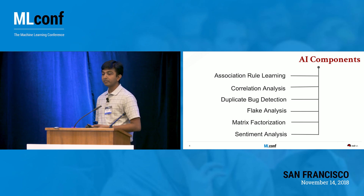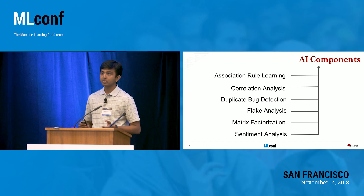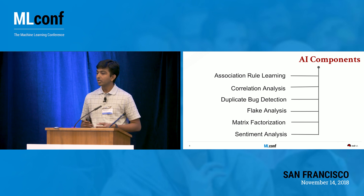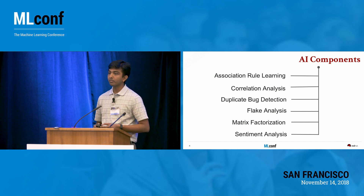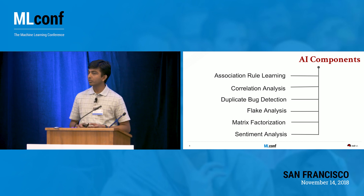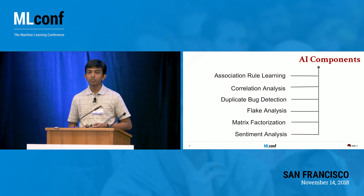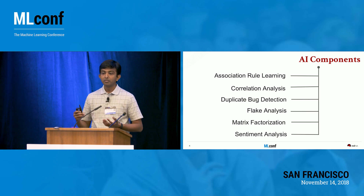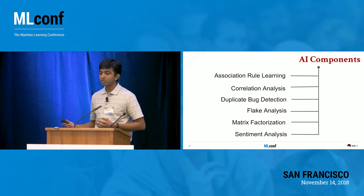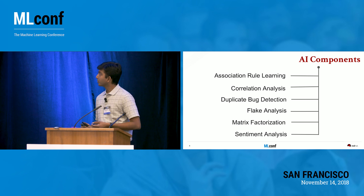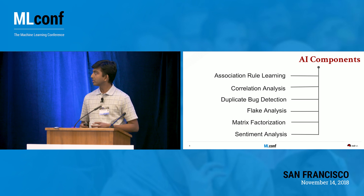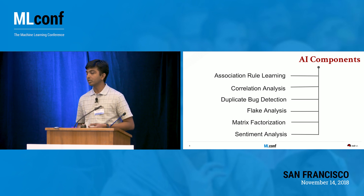We have matrix factorization, which is popular and used in recommendation systems. You might recognize this algorithm from the famous Netflix Prize challenge — it was used to recommend movies based on user ratings. In a software engineering environment, you could use it to recommend packages or software dependencies based on your software ecosystem.